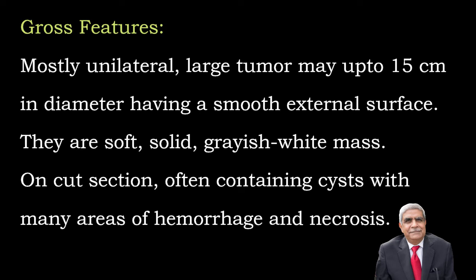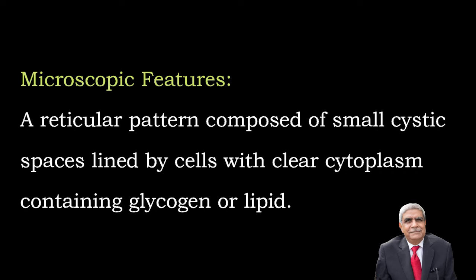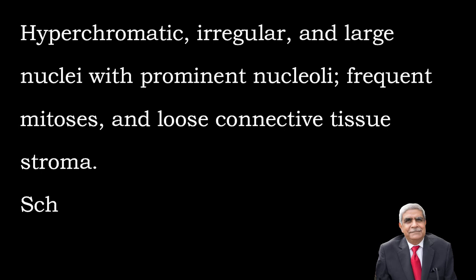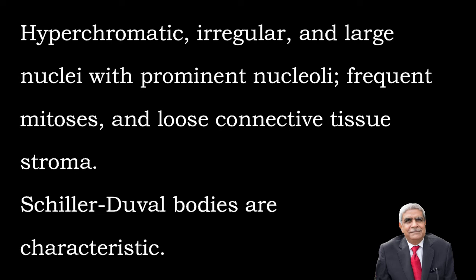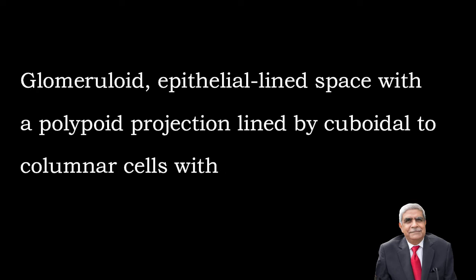They are soft, solid, grayish-white mass. On cut section there are cysts which are present with areas of hemorrhage and necrosis. Microscopic features: there is a reticular pattern which is composed of small cysts lined by cells with clear cytoplasm containing glycogen or lipid, hyperchromatic, irregular and large nuclei with prominent nucleoli. Mitosis are frequent, and loose connective tissue stroma gives it a lace-like pattern.